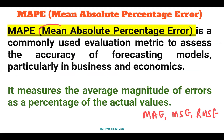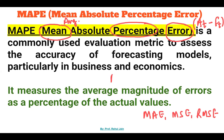With the terminology itself: mean means average value of the error. Error is nothing but the difference between actual value and forecasted value. So the difference between actual value and forecasted value is the error. Mean is average, and absolute percentage means we figure it out in terms of percentage. Basically, MAPE — mean absolute percentage error — is a kind of evaluation metric to figure out the accuracy of any forecasting model, to determine up to what accuracy it is forecasting things.